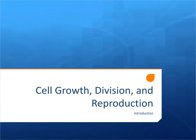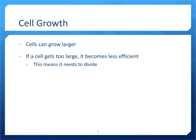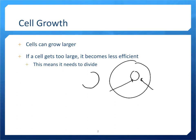In this lecture, we're going to talk about cell growth, division, and reproduction. Cells can grow larger, but if they get too large, it becomes less efficient, because it takes a long time for nutrients to make it into the nucleus from the outside of the cell. Smaller cells are more efficient because there's less distance to travel for nutrients to reach the nucleus. So if cells get too big, they need to divide.